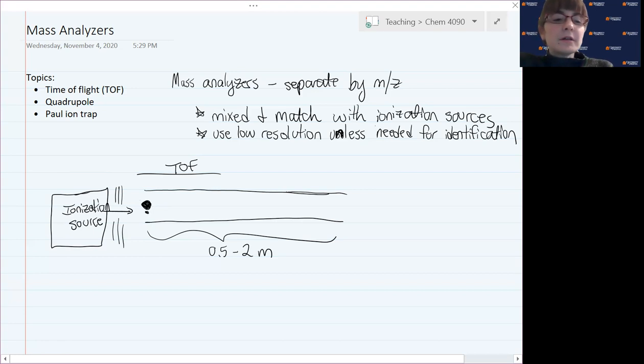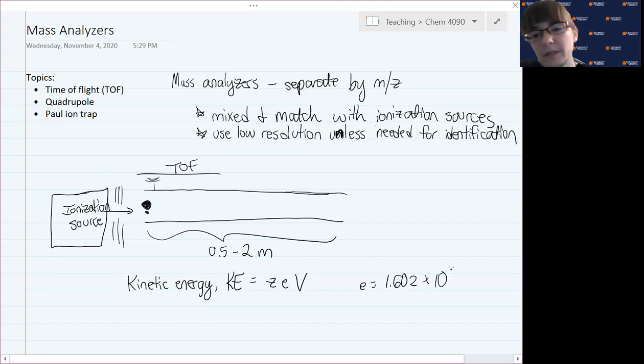These are going to be accelerated through the tube by applying an electric field across the tube, a voltage. We can actually then define the kinetic energy that is applied to the molecules as they move through the tube in terms of the voltage that's applied. Our kinetic energy is equal to the charge of the ion times the charge of an electron times the voltage. That electron charge is a constant, 1.602 times 10 to the -19 Coulombs.